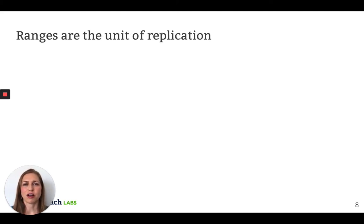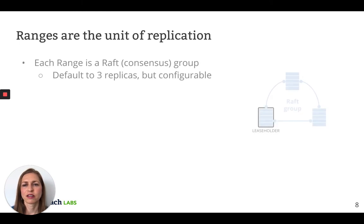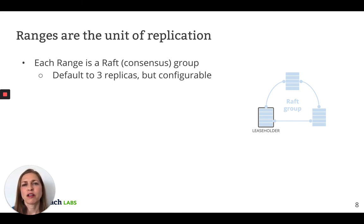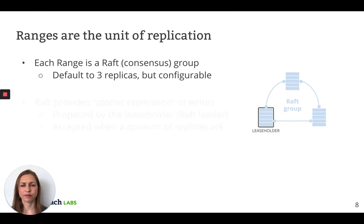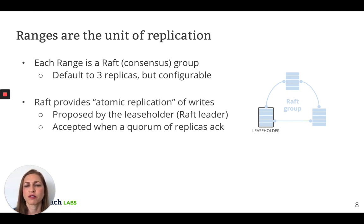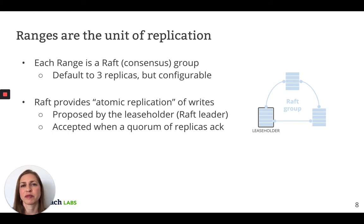Ranges are also an important concept in CockroachDB, since they're the unit of replication. We use the Raft consensus protocol for replication, and each range is a Raft group. Let me just emphasize that — each range is a Raft group because we do not replicate at the level of nodes, we replicate at the level of ranges. This allows us fine-grained control over data placement and also allows us to configure the replication factor on a per-range basis to make certain important ranges more fault-tolerant. A distributed consensus protocol like Raft provides a useful building block, which is atomic replication. Write commands are proposed by the leaseholder, which for the purposes of this talk you can assume is the same as the Raft leader.